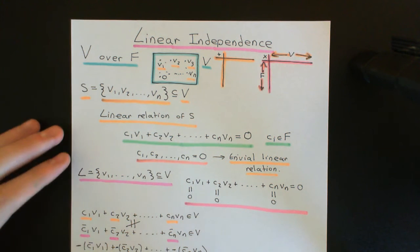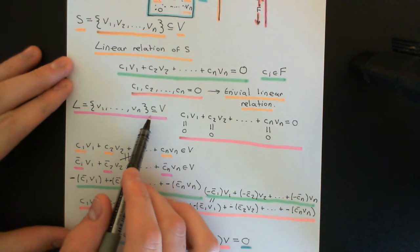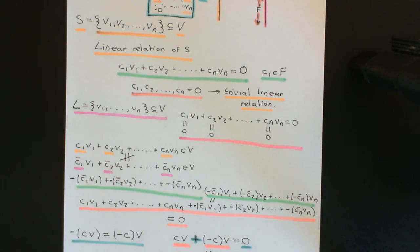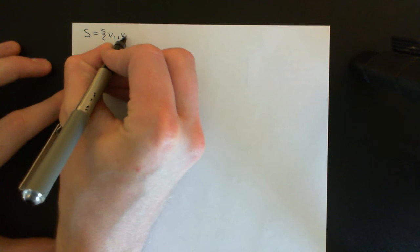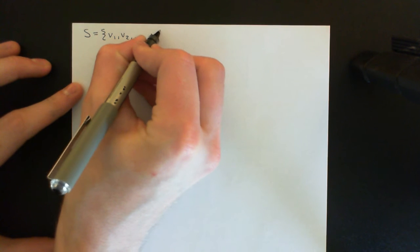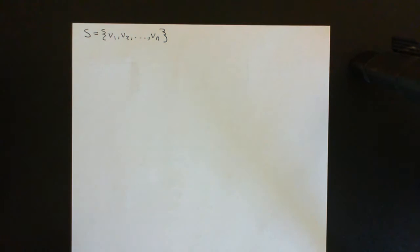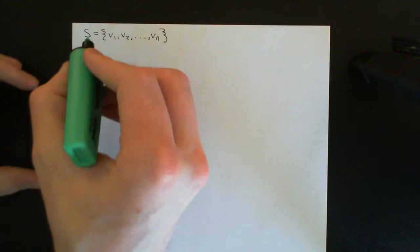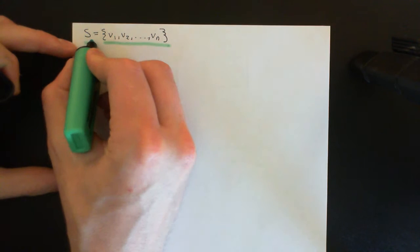What we now want to do is get a bit more intuition for what it means for a set of vectors to be linearly independent by looking at what is true in a set that isn't linearly independent. So we're going to take a set of vectors which we'll call S again — V1, V2, all the way up to Vn — and we're going to assume that this is not linearly independent. A set of vectors that isn't linearly independent is called linearly dependent.